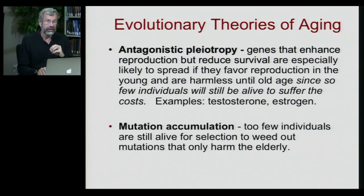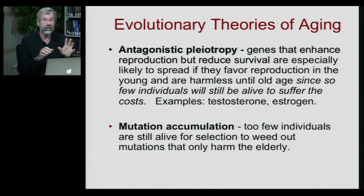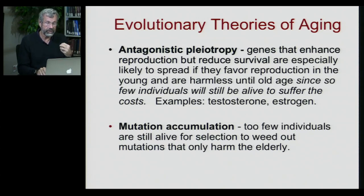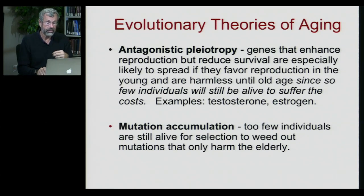The second theory of the evolution of aging is called mutation accumulation. In this case, there's no advantage to these genes at all. It's simply that there are so few individuals still alive at old age that selection is too weak to weed out these mutations if they only harm older individuals.